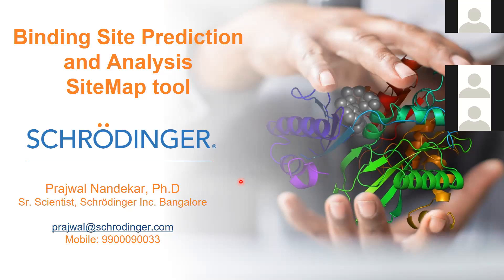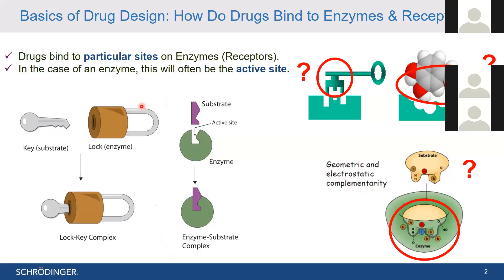In Schrödinger, we have a very useful tool called SiteMap, which helps in binding site predictions and further analysis. At this point, just remember the name of this module: SiteMap.